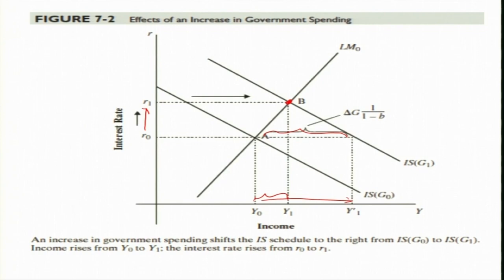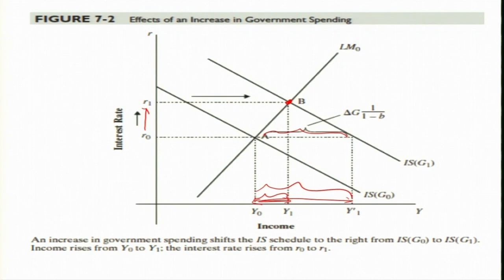As a result, the increase in income that was supposed to happen is larger, but actually the increase in income was only Y-naught to Y-1. This is due to the crowding out effect of government expenditure on private investment.